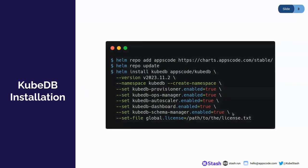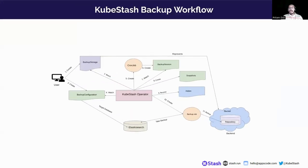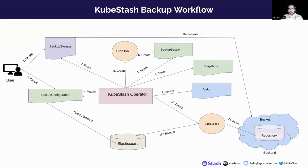I will use KubeDB to provision Elasticsearch in my kind cluster, and you can install KubeDB through the Helm commands shown here. So let's jump to the KubeStash backup flow.